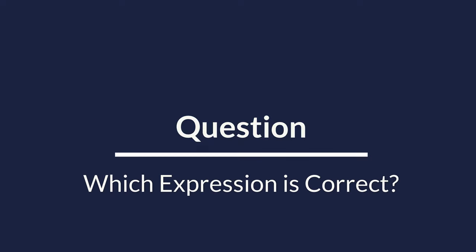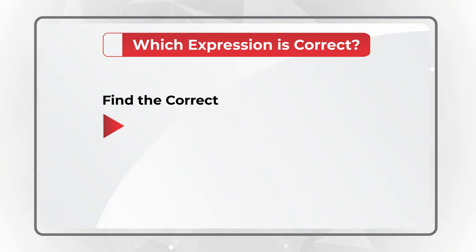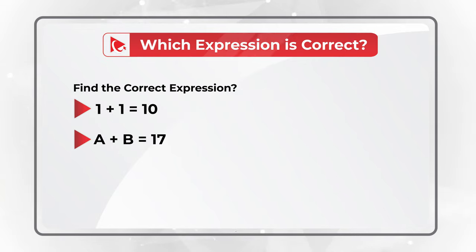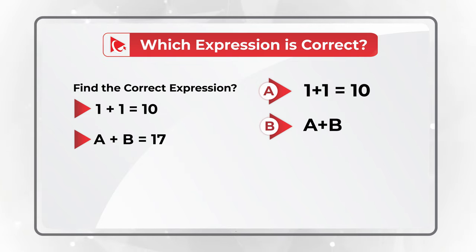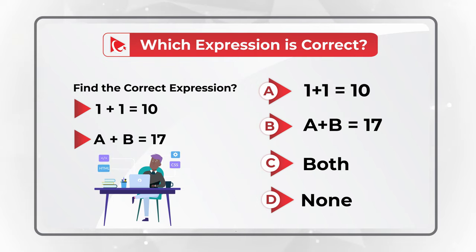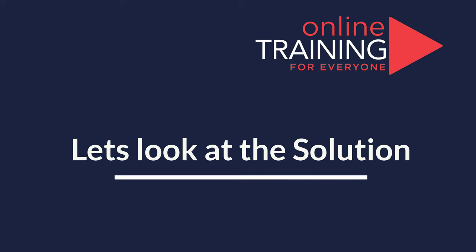Here's a very unusual question which is frequently used in tests. You need to find the correct expression. You're presented with: first choice — 1 plus 1 equals 10; second choice — A plus B equals 17. You have four options: Choice A: 1 plus 1 equals 10 is correct; Choice B: A plus B equals 17 is correct; Choice C: both are correct; Choice D: none is correct. I'm going to give you a quick hint — if you have a degree in computer science it might be easier for you. I'm moving forward to share the right solution.